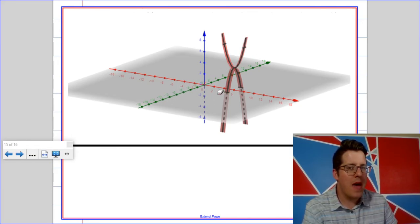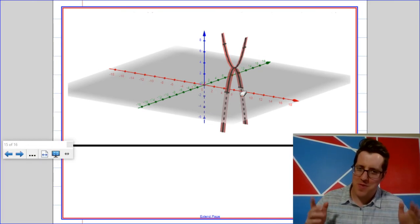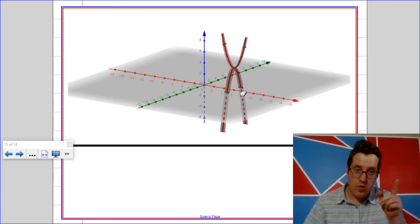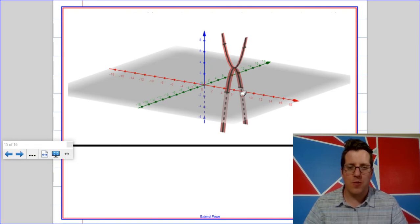That's where your imaginary zeros are, where the graph hits that plane. It's pretty neat but it also takes a third dimension. Good news is we've got a third dimension so we're good.